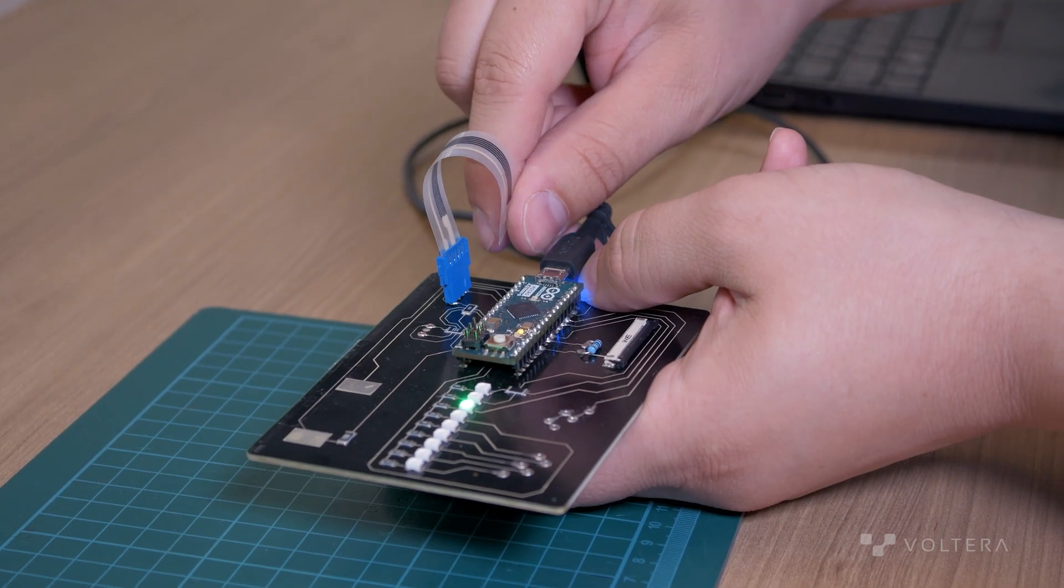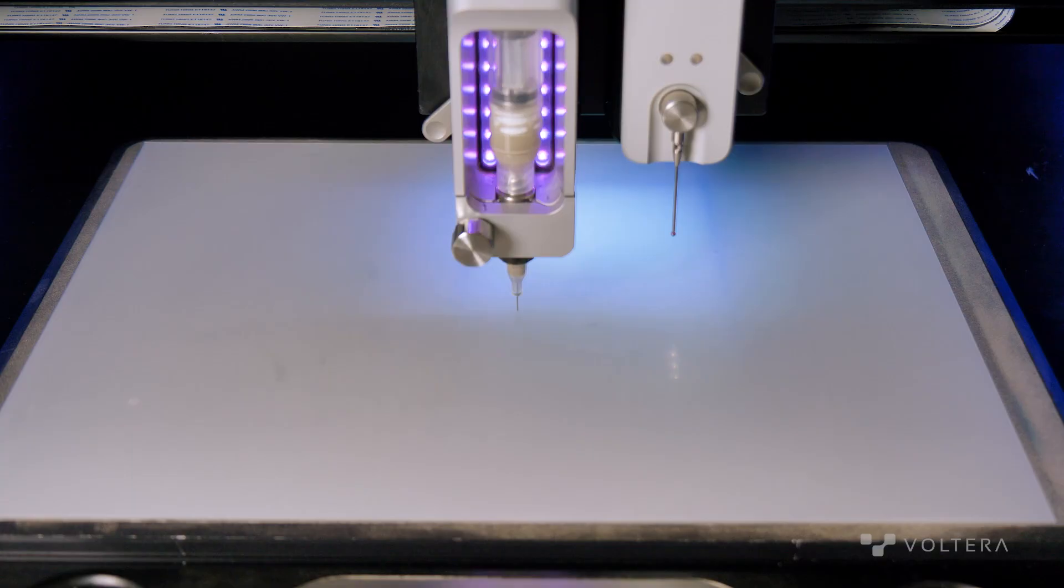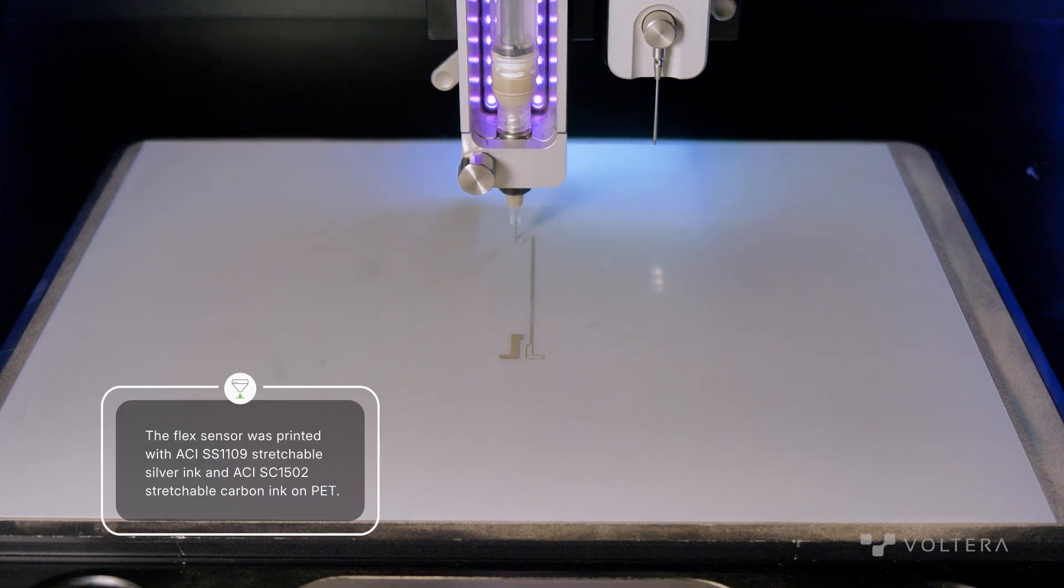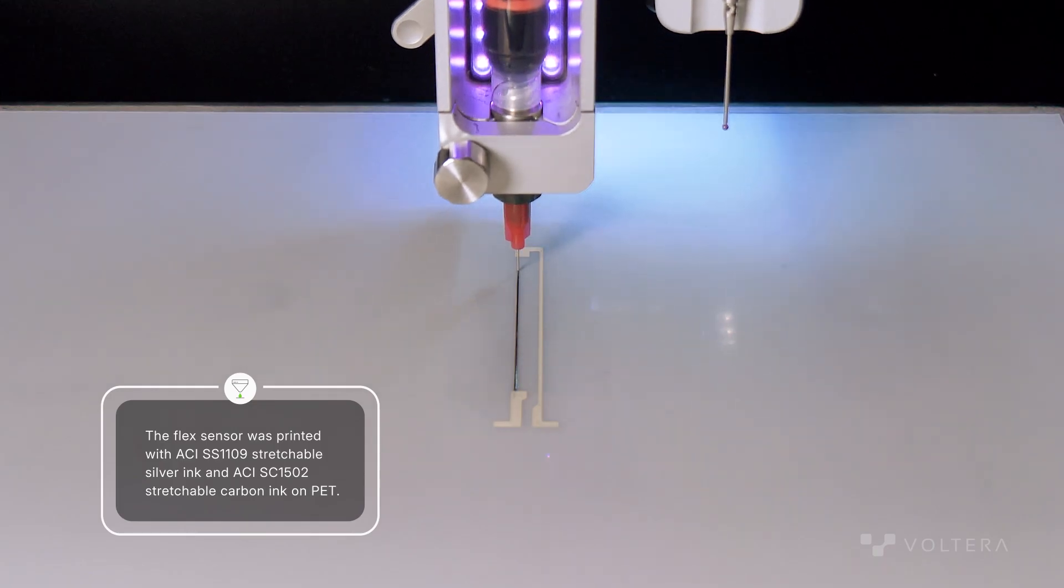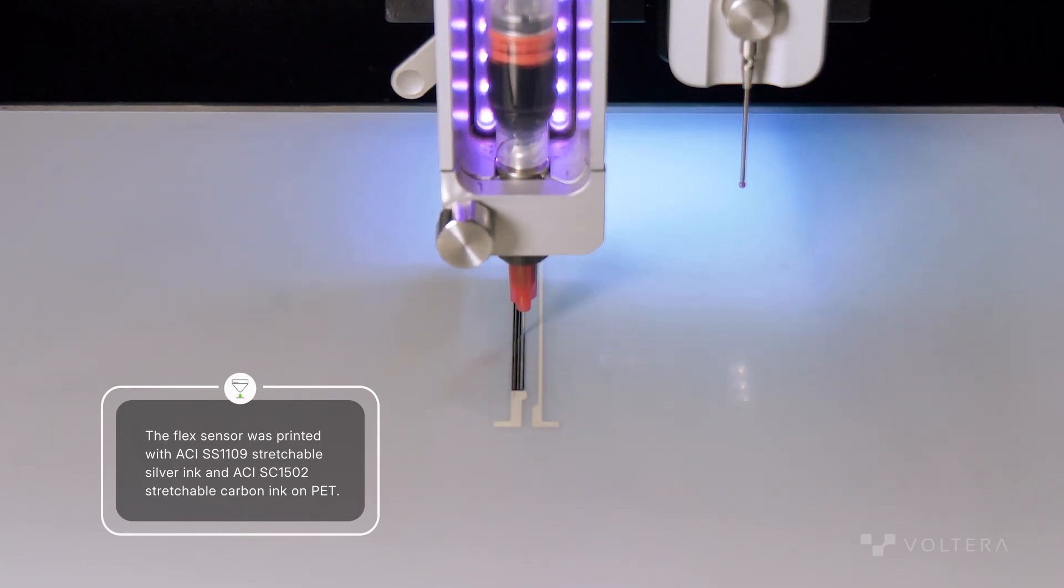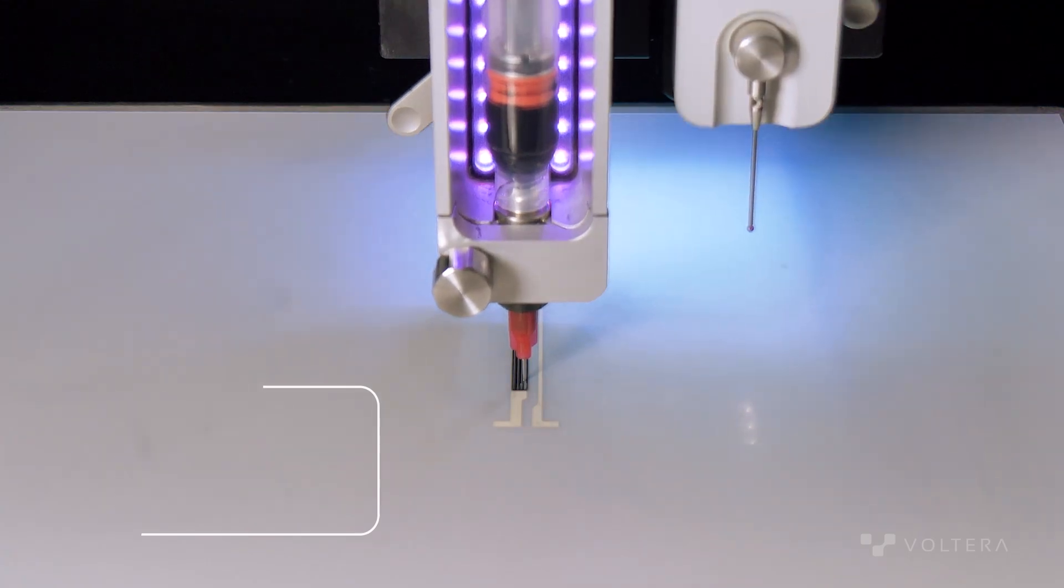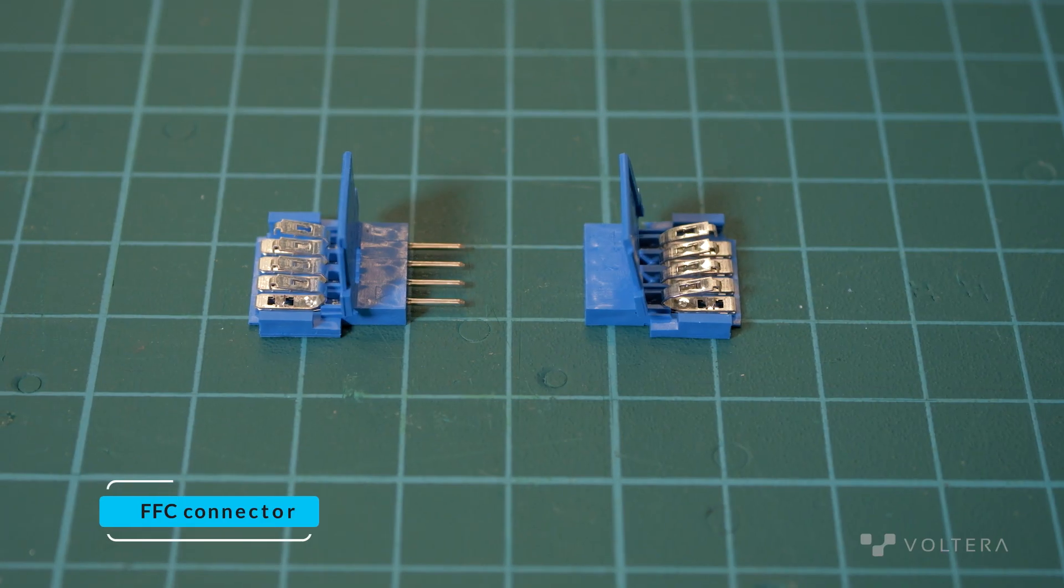Next up we have a flex sensor, which detects changes in resistance when the sensor is bent. This sensor was printed on PET, again a flexible substrate. We'll also be using a crimp connector, but in this instance we're using a flat flexible cable connector, or FFC, to make this crimp connection.